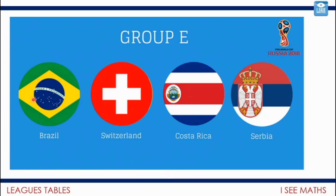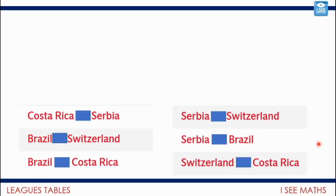To understand this one, start with Brazil — they will play three matches: Brazil v Switzerland, Brazil v Costa Rica, and Brazil v Serbia. That's three matches. Switzerland's match with Brazil is already counted, so they've got a match against Costa Rica and one against Serbia — another two matches, so five so far. That leaves Costa Rica v Serbia — six matches in total.